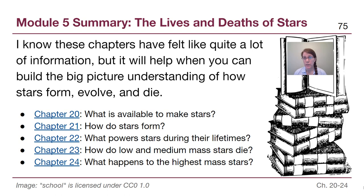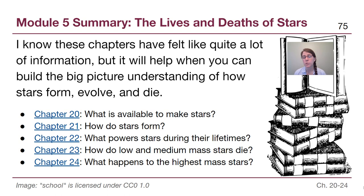If we look back at the chapters and the main goals of those chapters: in chapter 20 we talked about what stuff is out in space that is available to make stars from. One section of chapter 21 tells us how stars actually form from that material. Chapter 22 talked about what stars do once they are fully formed — star clusters, the main sequence, and fusion — making sure we understand that stars are powering themselves from hydrogen to helium fusion while they are on the main sequence.